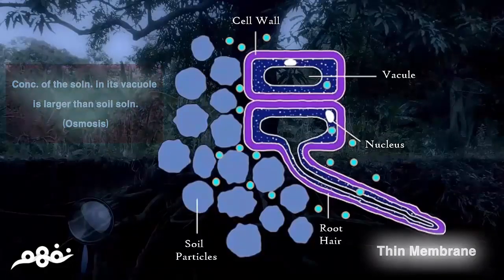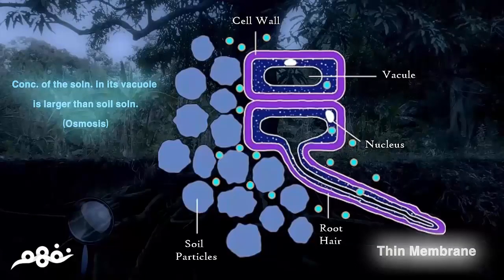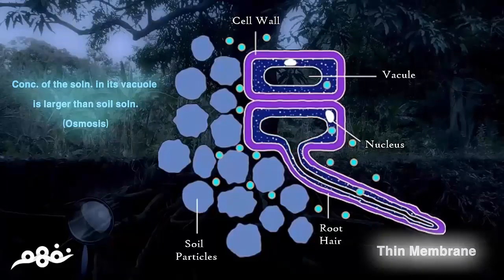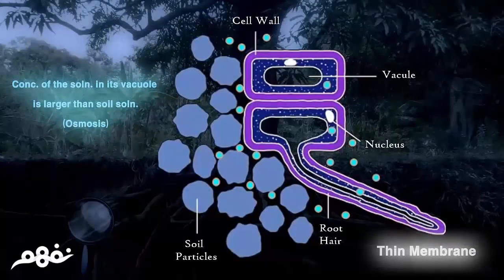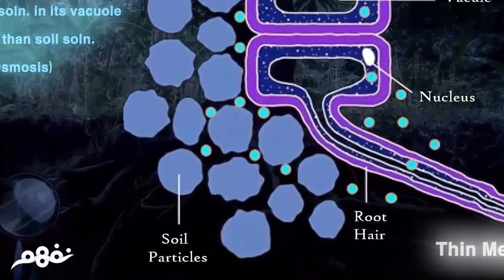So how can this simple part of the root absorb water and mineral salts from the soil? It has a mechanism called osmosis. Osmosis is the transmission of water molecules, which also carry mineral salts, through a semi-permeable membrane from an area of high water concentration to an area of low water concentration. This occurs because the concentration of the solution inside the root hair vacuole is greater than the soil solution concentration.